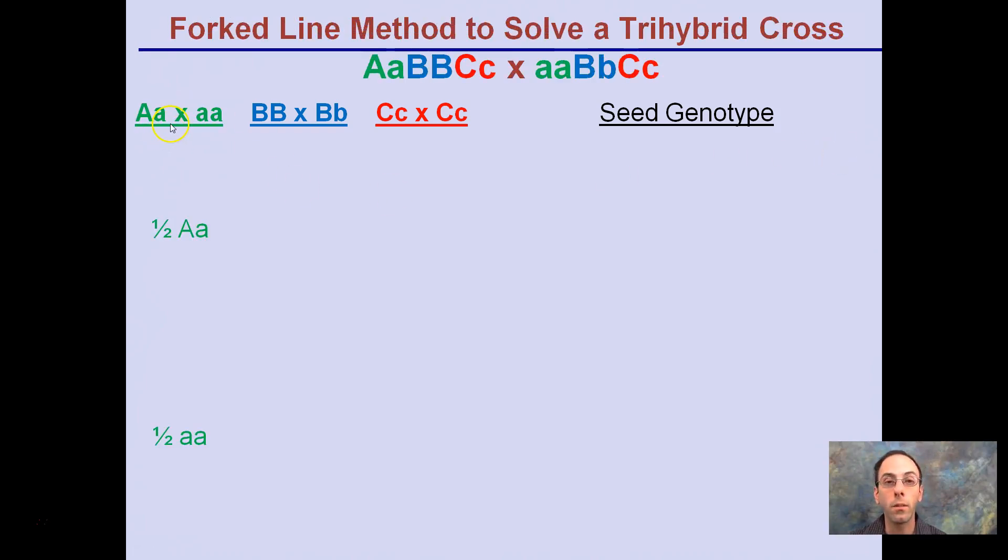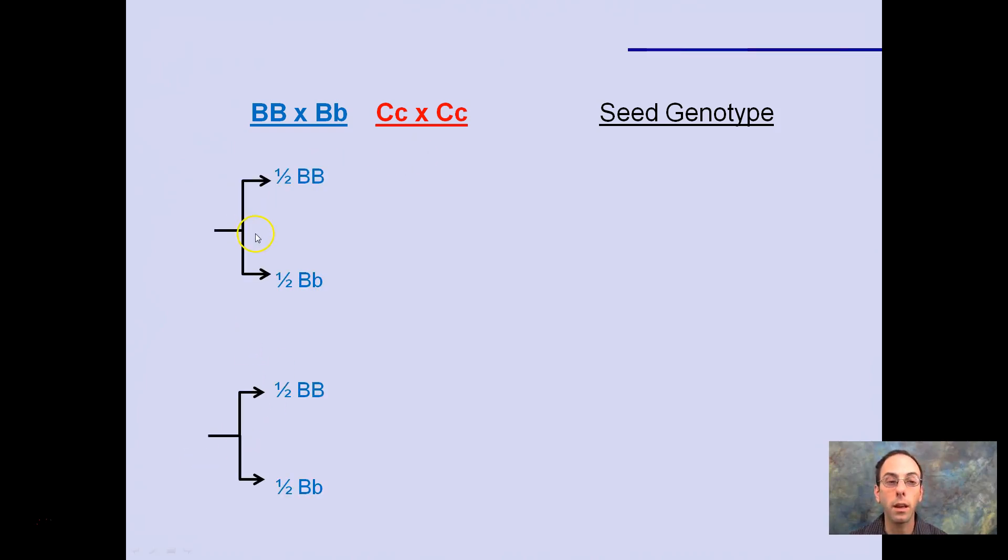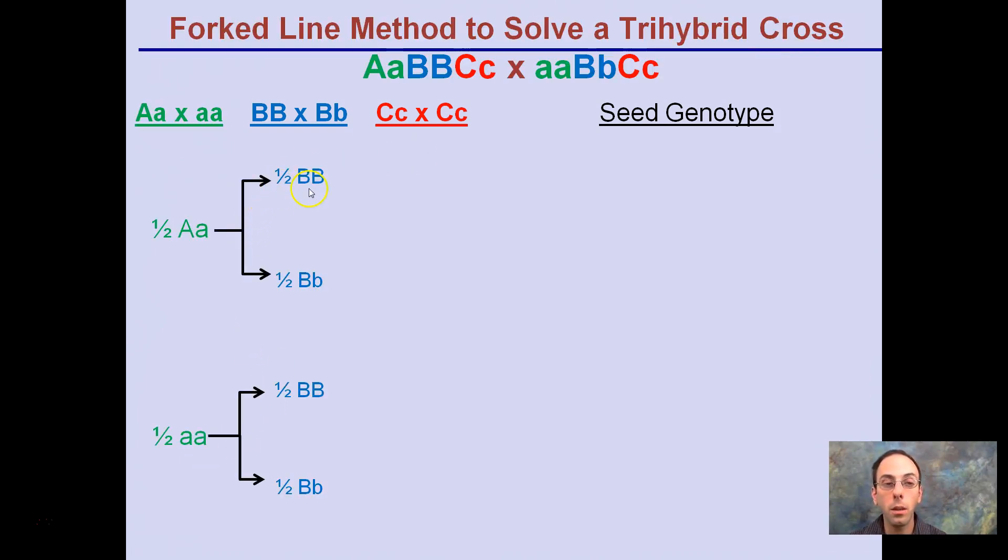So let's start with the first one here. We start with our resulting from the A alleles. Half would be heterozygous, half would be homozygous recessive. Now we've got to include the B's. So we bring in the B's now. Half would be big B, big B, half would be big B, little b. Same thing here, also needs to apply to the homozygous recessive ones. Half would be homozygous dominant, half would be heterozygous. Kind of following along so far, you can flip back or pause me at any time.